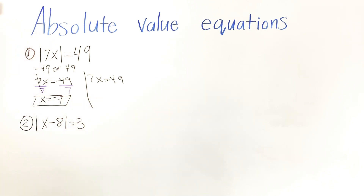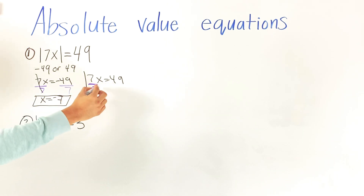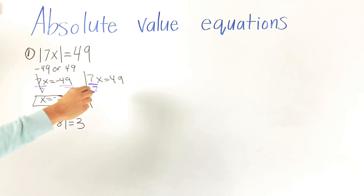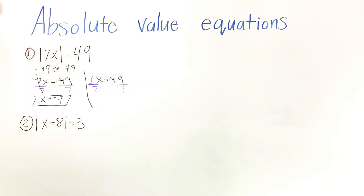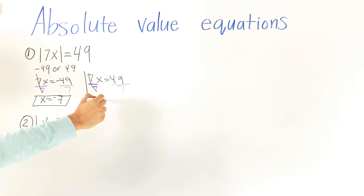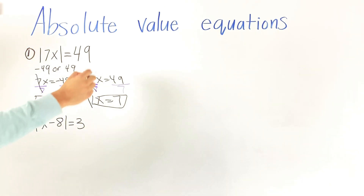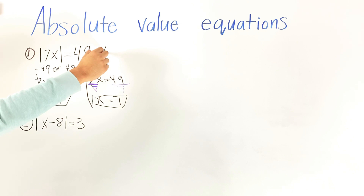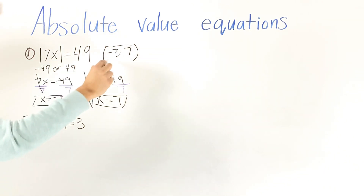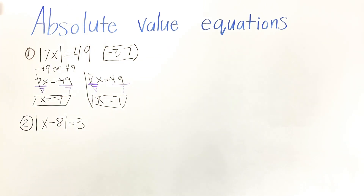On the other side, we do the same thing — divide by 7 on both sides. That cancels and leaves x by itself, so x equals 7. Your answer for number one is going to be negative 7 or positive 7.